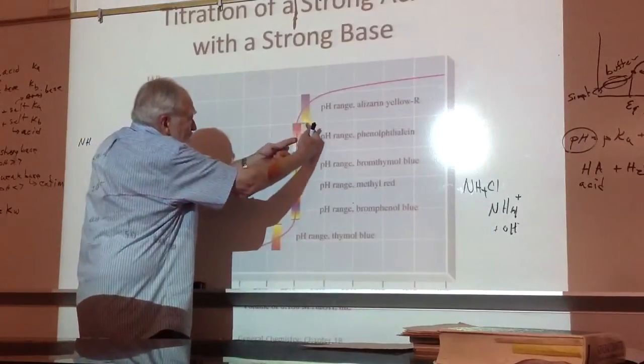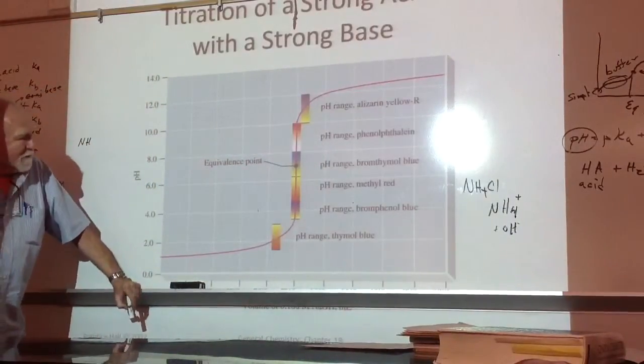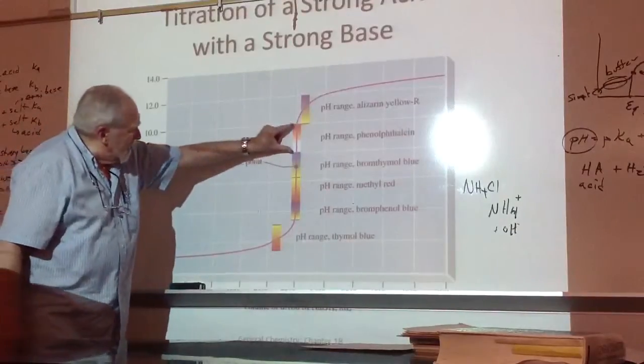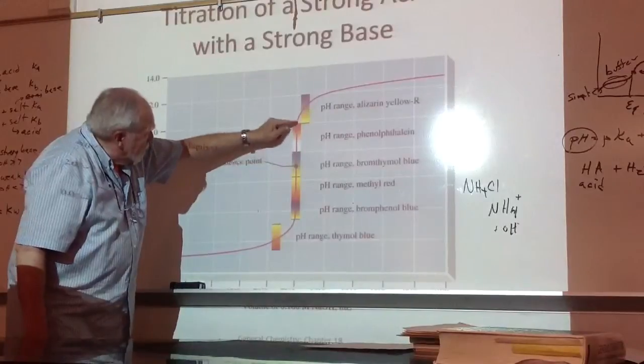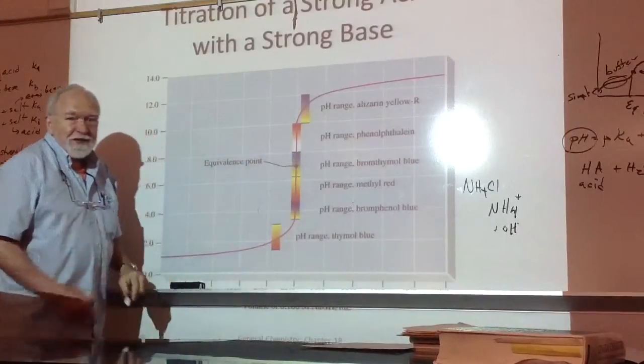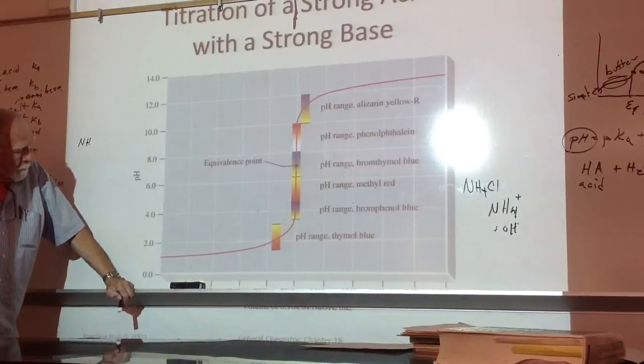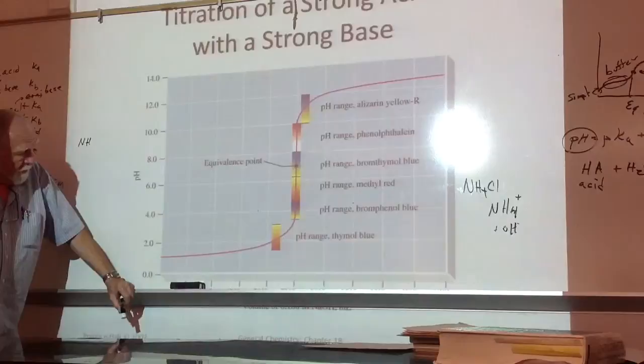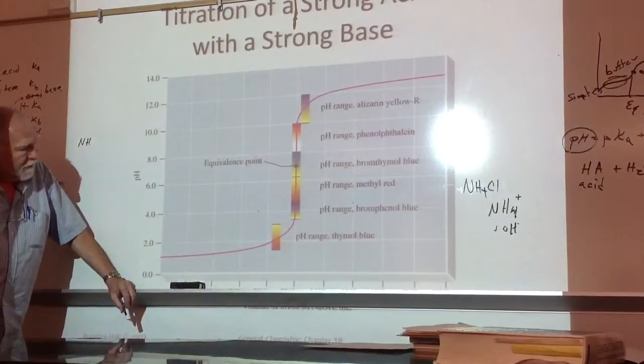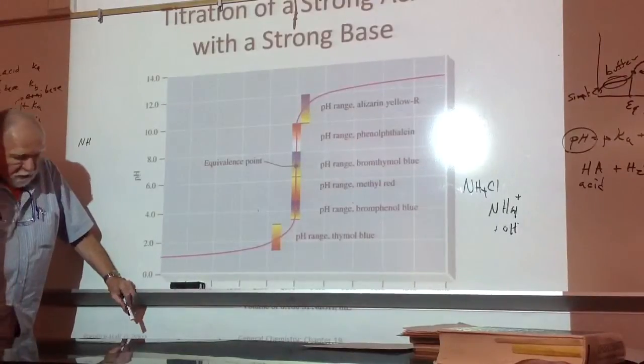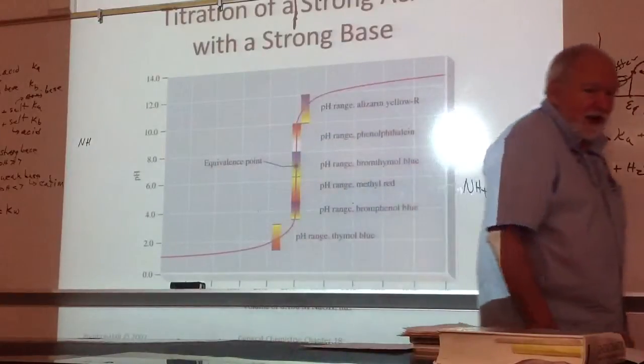That wasn't a particularly good one. Right in here is phenolphthalein. It's off from the pH 7, it changes between 8 and 10, but notice the curve is so sharp that there's only a small titration error. That's the one we used last semester. So each indicator changes at a different pH range, and they all have their different uses. The most common one is phenolphthalein. It's cheap. Everybody recognizes colorless and light red.